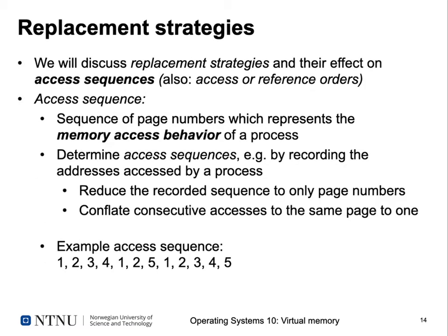The problem is to choose which page to page out — the so-called victim page. This involves replacement strategies: algorithms that determine which page to replace. We will discuss these strategies with respect to access sequences, which are sequences of page numbers representing the memory access behavior of a process over time. We determine these sequences by recording all addresses accessed by a process — fetched instructions, loaded values, stored values — and then reduce the data by only keeping page numbers, ignoring offsets within a page.